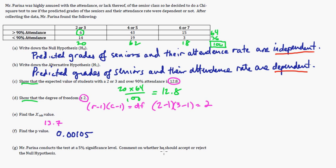Now, the whole purpose of this video is I want to show you that you don't need a critical value to interpret this. So, if we look, it says Mr. Perrin conducts a test at a 5% significance level. That's the important part. Comment on whether he should accept or reject the null hypothesis. Well, if it's 5%, 5% as a decimal is 0.05. So, if p is greater than 0.05, we are going to accept the null hypothesis. If p is less than 0.05, we are going to reject it.